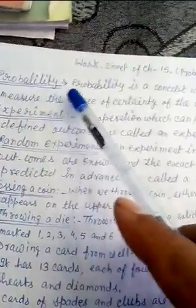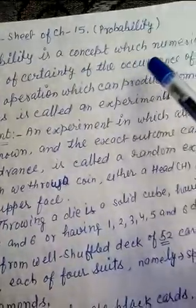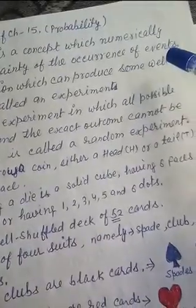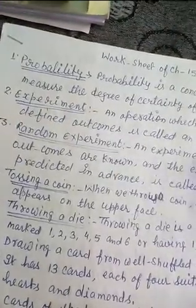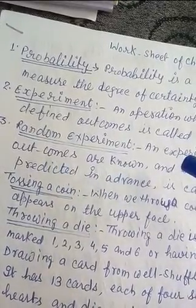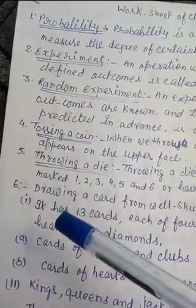Probability is the concept which numerically measures the degree of certainty of the occurrence of an event. Empirical events, already we are discussing in previous notes. Random experiments also, like tossing or throwing a dice.